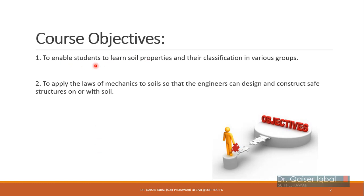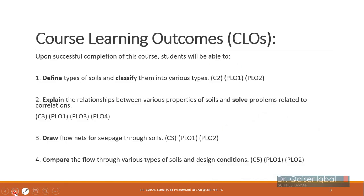There are basically three courses in your curriculum regarding geotechnical engineering: first is Geotechnical Engineering 1, then Geotechnical Engineering 2, and then Geotechnical Design. In this course we will learn about soil properties and classify them in various groups. We will also study seepage and permeability topics. The first objective is to enable students to learn soil properties and their classification according to various classification systems like USCS, British Standards, and AASHTO. The second objective is to apply the laws of mechanics to soils so engineers can design and construct safe structures on or using the soil.